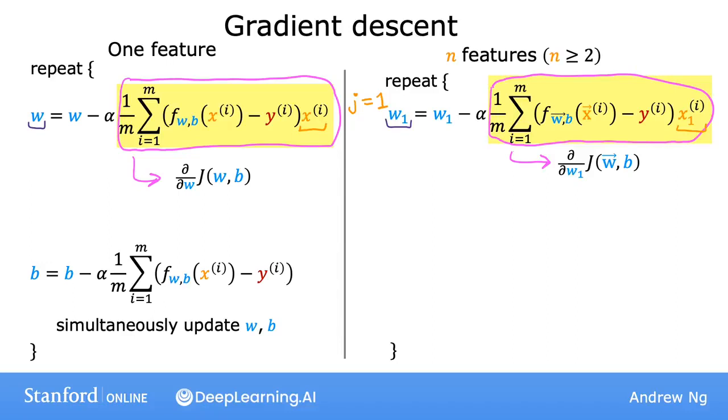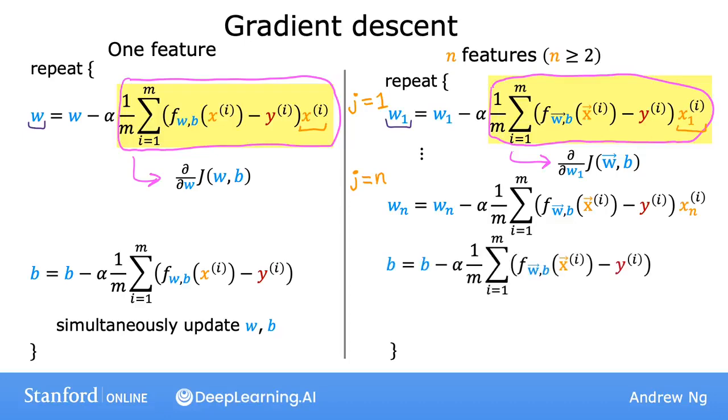For multiple linear regression, we have j ranging from 1 through n. And so we'll update the parameters w1, w2 all the way up to wn. And then as before, we'll update b. And if you implement this, you get gradient descent for multiple regression. So that's it for gradient descent for multiple regression.